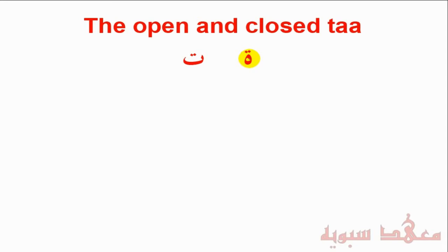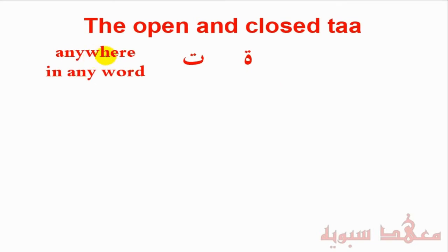Now there are some differences. The first one is in which words they are found. The open tā' is used anywhere — meaning in any position of the word and in any word — either in a noun, a verb, or a particle. So it's not restricted to any type of word in the Arabic language.